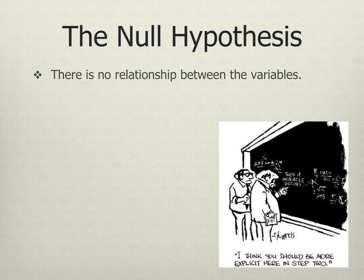Let's take an example. Much education theory suggests that there is a relationship between the socioeconomic status of the family of origin and GPA. So let's say you hypothesize that there is a relationship between the socioeconomic status of family of origin and the GPA of students at Cal Poly Pomona. The null hypothesis would then be: there is no relationship between the socioeconomic status of family of origin and the GPA of students at Cal Poly Pomona.